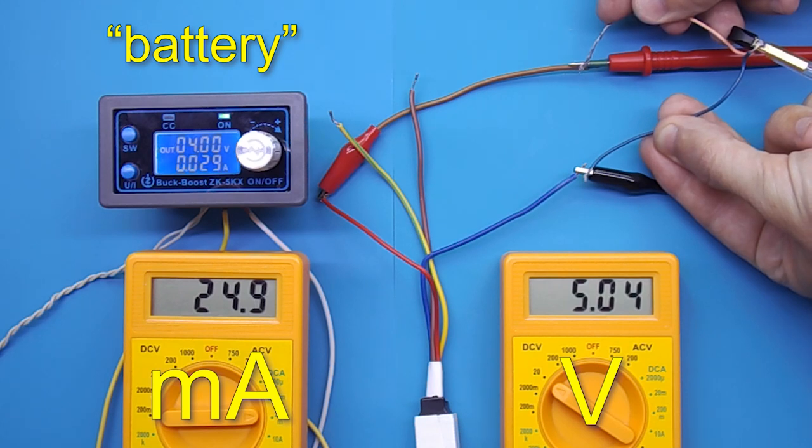From the converter, the connected light bulb now consumes a little current. And the converter itself from the power supply consumes 25 milliamps.